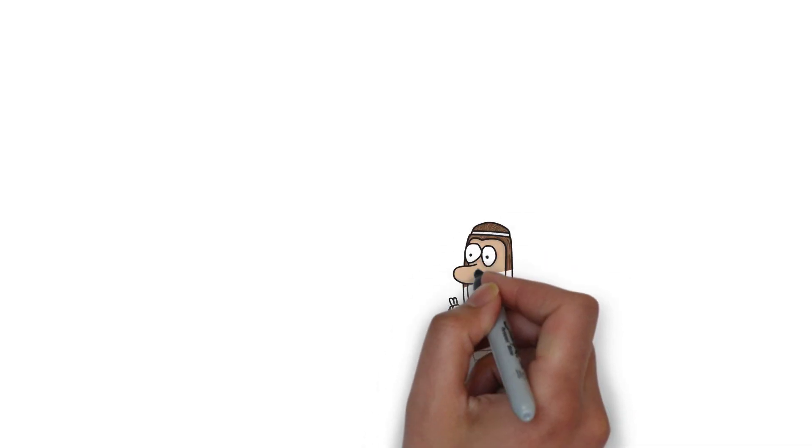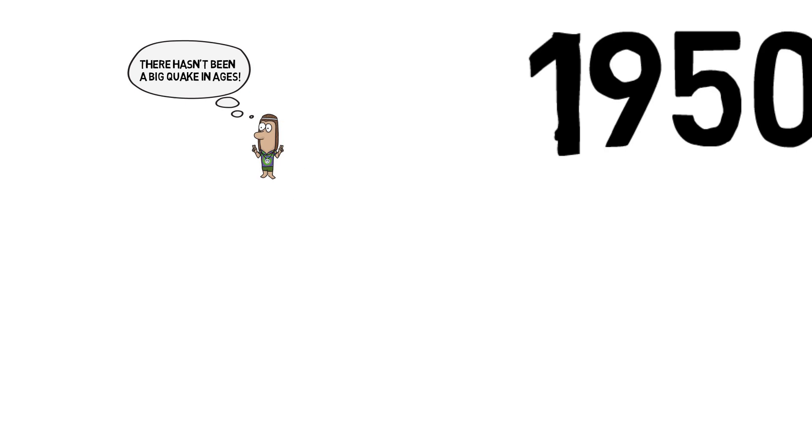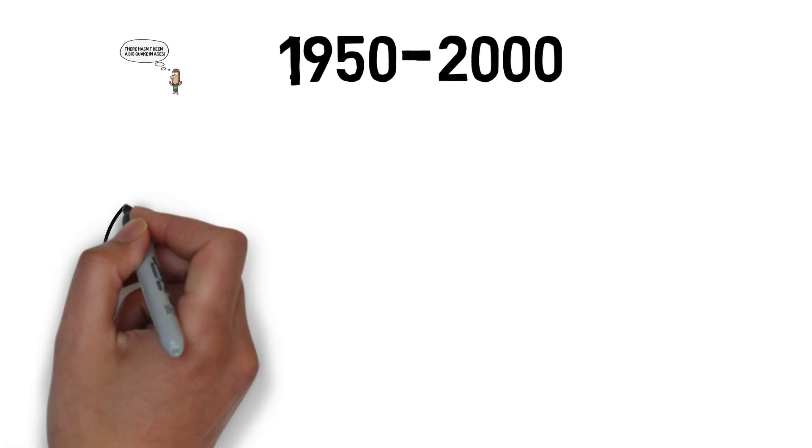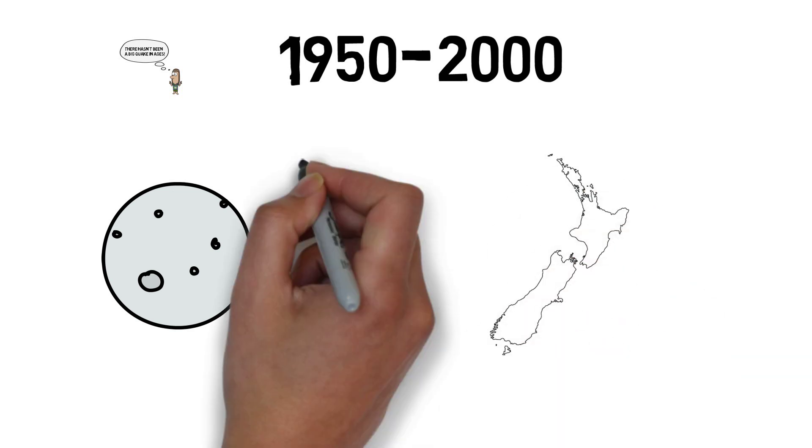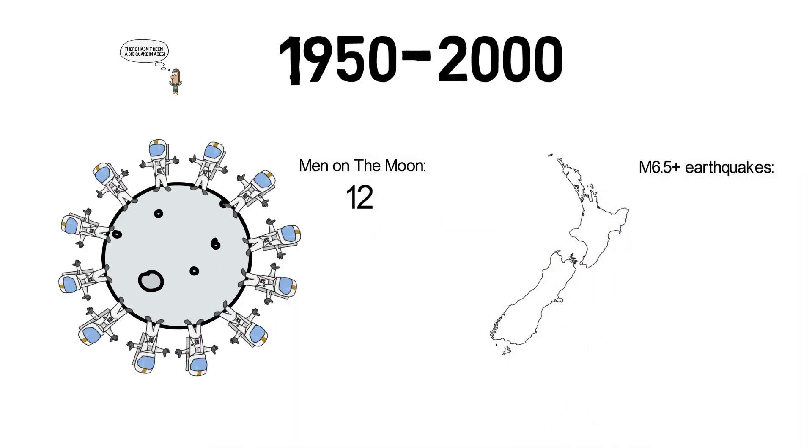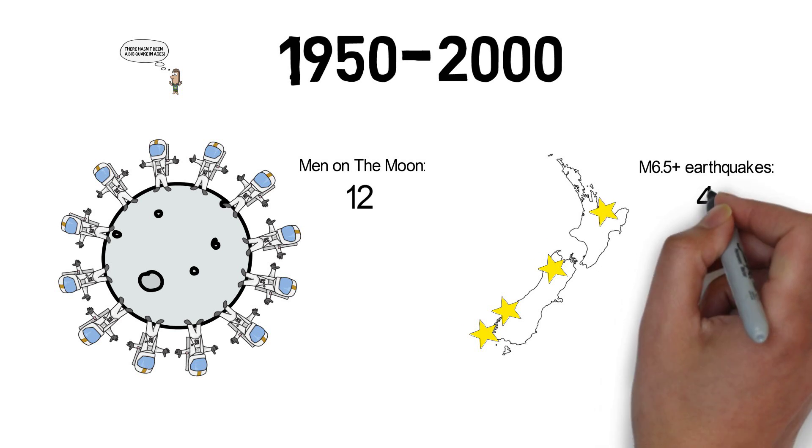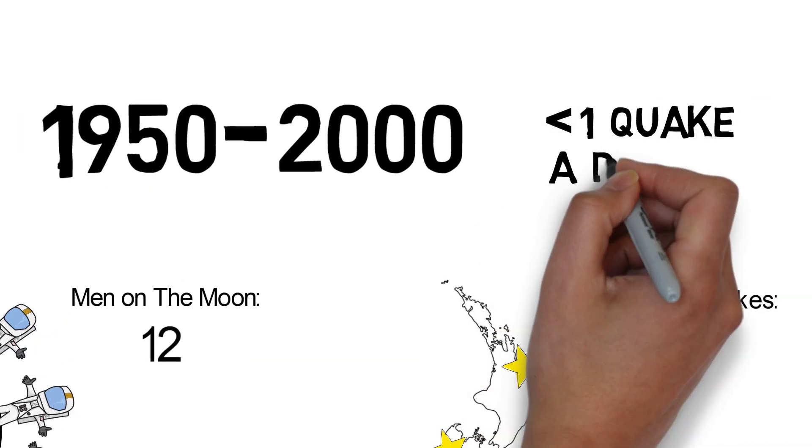Anyone growing up in New Zealand in the 1960s and 70s might assume that big quakes don't happen often. Between 1950 and 2000 there were three times as many men who set foot on the moon than there were large earthquakes in New Zealand. That's less than one quake a decade.